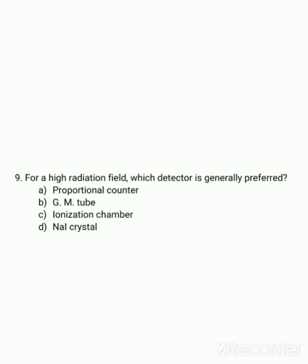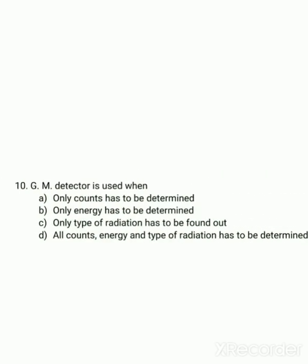The ninth question: for a high radiation field, which detector is generally preferred? In our departments, mainly two types of detectors are used — ionization chambers and GM counters — but for high radiation fields, the ionization chamber is used. We cannot measure high radiation fields using a GM detector. With a GM detector we can only determine counts; energy cannot be determined because in GM detectors an avalanche is formed, so energy information is lost. We also cannot determine the type of radiation using a GM detector. The correct answer is: only counts can be determined.